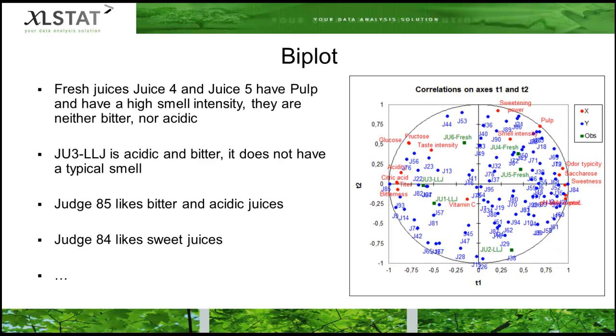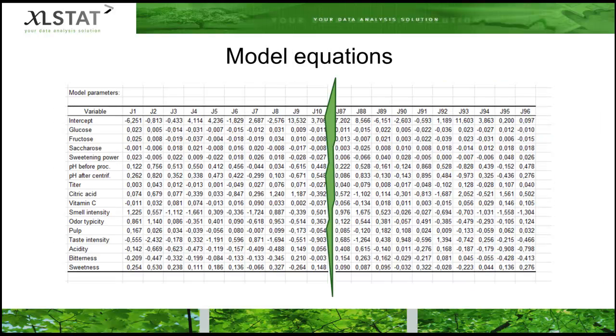Then the biplot explains that the similarity among the long-life juices is due to acidity and bitterness, and the fresh juices show strong smell intensity and are sweeter. Finally, we get the model equations which are the reasons of preference for each judge.